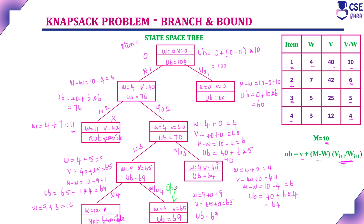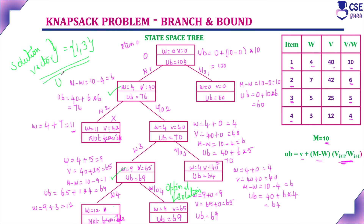This step is considered the optimal solution — this is the last step. The solution vector contains the items added into the knapsack: we added item 1 and item 3. Items 2 and 4 could not be added since they do not satisfy the problem constraint. So the solution vector is (1, 3). This is our optimal solution with upper bound value 69 as the final upper bound value.